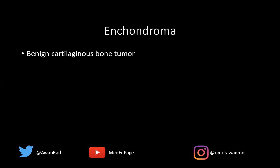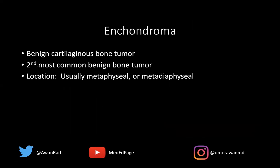An enchondroma is a benign cartilage bone tumor. In fact, it's the second most common benign bone tumor that we see. The location is usually metaphyseal, as in our index case in the proximal fibular metaphysis. It can be metadiaphyseal as well, but it is usually central — not an eccentric location as in a non-ossifying fibroma, fibroxanthoma, or fibrous cortical defect.